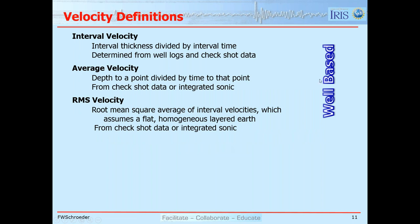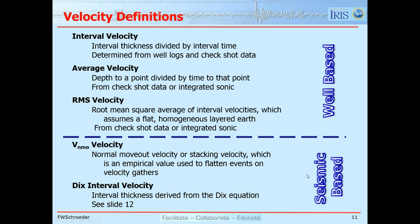A couple of definitions. From well data, we can get interval velocities — interval thickness divided by interval time. We can get average velocities down to a certain depth, and RMS (root mean square) velocities from check shot data or by integrating the sonic log. From seismic-derived velocities, we can get the NMO (normal moveout) velocity from data processing — the velocity that flattens the gathers — and then use the Dix equation to get interval velocities.